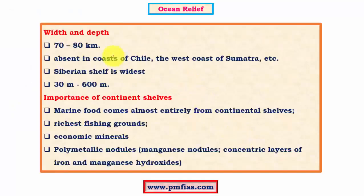Coming to the depth, continental shelves are not very deep — depth varies between 30 to 600 meters, and width varies from region to region with an average width of about 70 to 80 kilometers. Continental shelves are very narrow or totally absent in certain regions, especially near convergent boundaries where trenches form — for example, the coastlines of Chile, Japan, and islands like Sumatra. Whereas on the other hand, we have the Siberian shelf with widths varying from 500 to 1000 kilometers, and the Grand Banks with shelves around 200 to 300 miles wide.